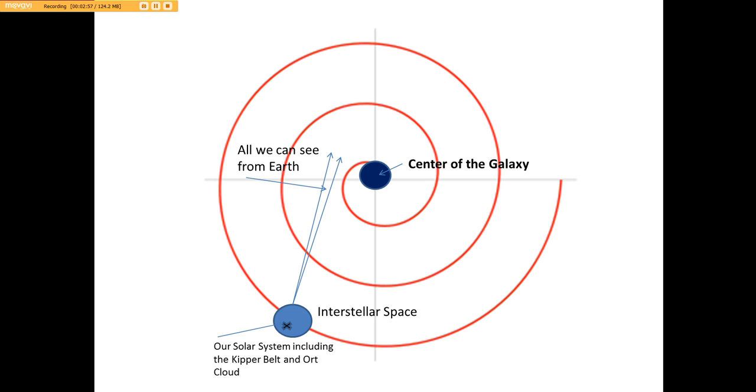So here I have done a very simple graphical representation of our galaxy. This is the center of the galaxy right here. The spirals represent the spiral bands in our galaxy. We call this the galactic plane, kind of gives us a center of an XYZ axis. This little area down here is us. I included, as you see, this is interstellar space. Here's our solar system. X marks the spot. This includes the Kuiper Belt and the Oort Cloud.